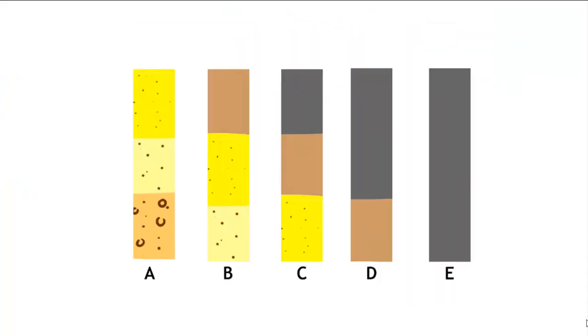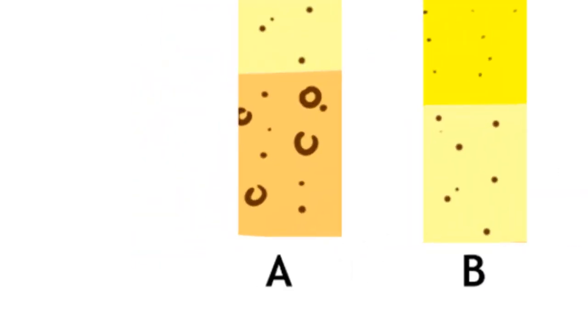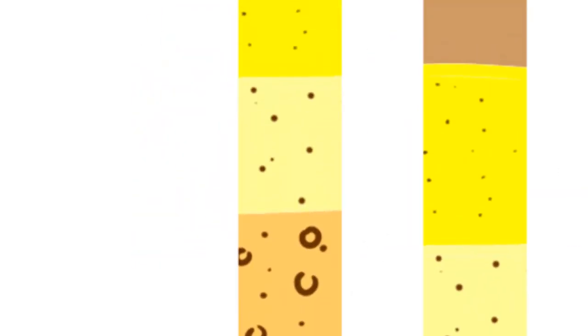If we had a series of cores that were drilled down at locations A, B, C, D, and E, we might get something like this. So location A shows the original gravel, overlain by coarse sand, overlain by fine sand.